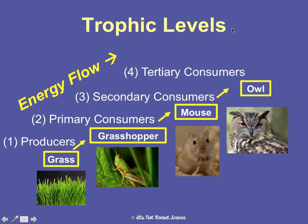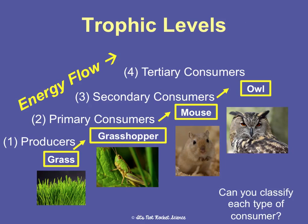Can you classify each type of consumer? The grasshopper eats grass, so it must be an herbivore. The mouse eats a grasshopper, so it's a carnivore. The owl eating the mouse is also a carnivore. We can't identify an omnivore from this food chain since no organism eats both plants and animals here.